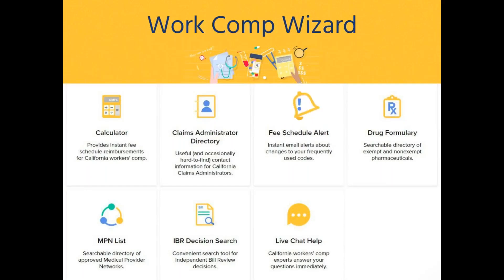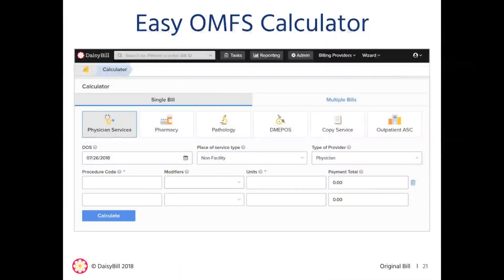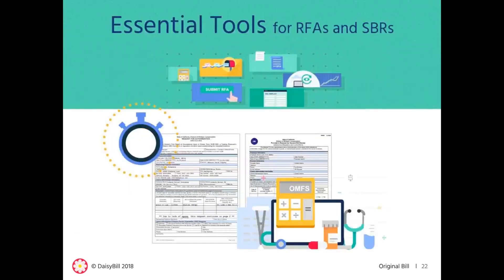For those who don't need the full scope of our billing software, we have the Work Comp Wizard. The wizard includes seven critical features to help California workers' comp professionals succeed, including the very popular OMFS calculator, which instantly calculates reimbursements for six medical fee schedules as well as the medical legal fee schedule. We also offer Essential Tools, which lets subscribers create second review appeals and requests for authorizations in seconds, and use our task management system to track payer responses to RFAs and SBRs.